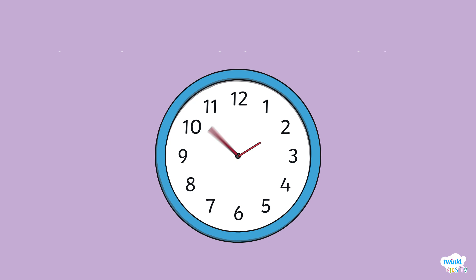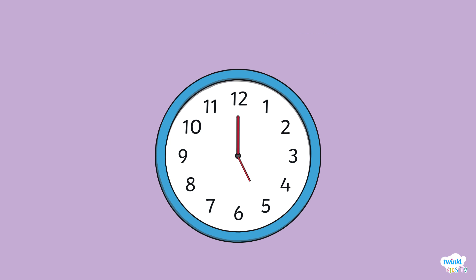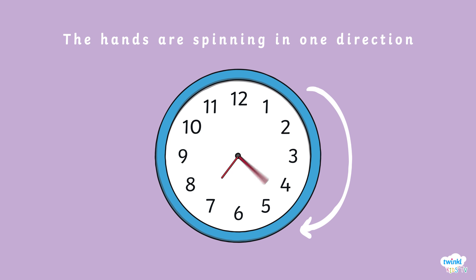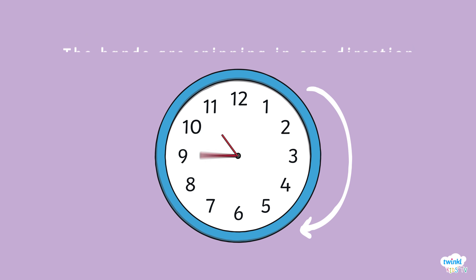The numbers on our clock face represent the hours. Look at the minute hand zoom around the clock. We've sped up how long it would usually take. You will notice that both hands are spinning in the same direction. We call this clockwise.